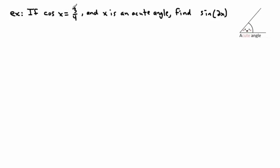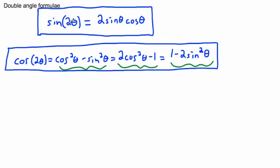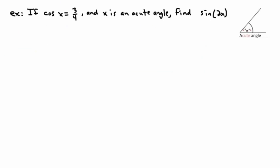Let's try an example. If cos x equals three over four, and x is an acute angle, find sine of 2x. So before anything else, we go get our equation: sine of 2x is going to be two sine x cos x. It's helpful to just write that down to start with.